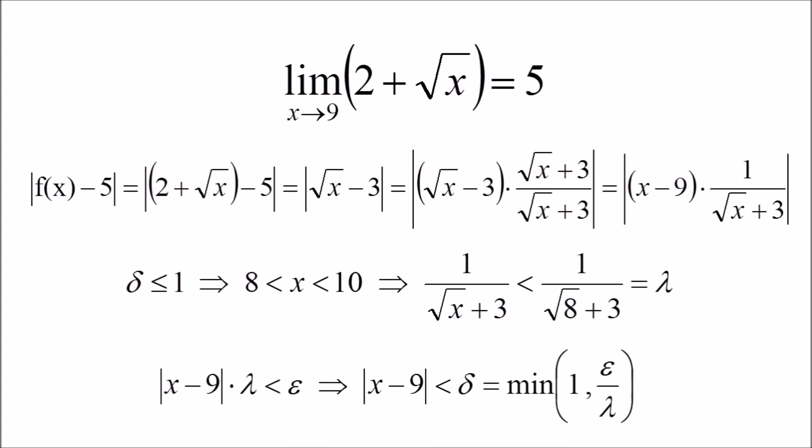The third step is to rewrite the delta inequality in terms of epsilon. Since we assume delta was less than or equal to 1, we take the minimum of 1 and epsilon divided by lambda.